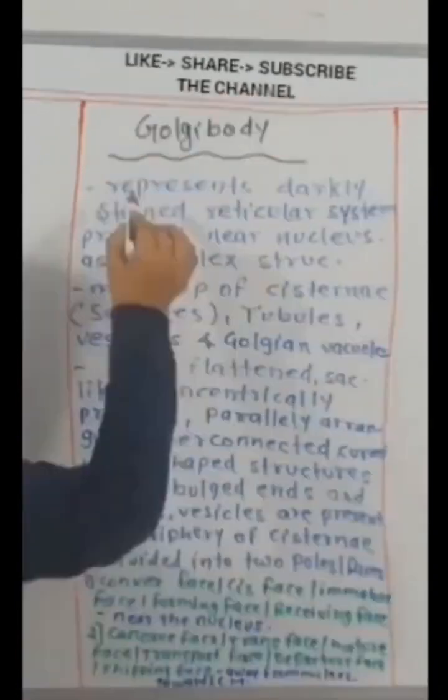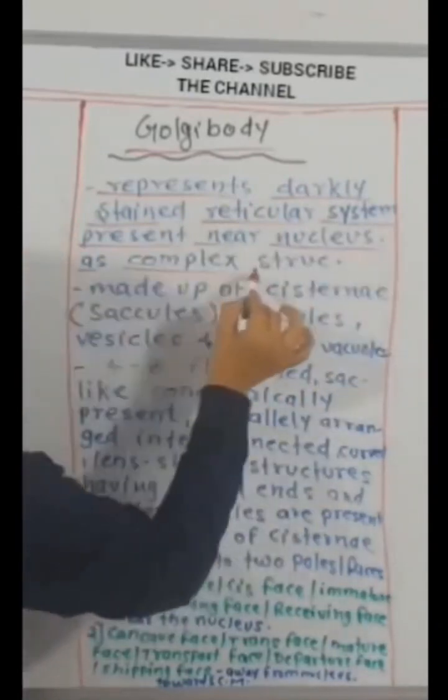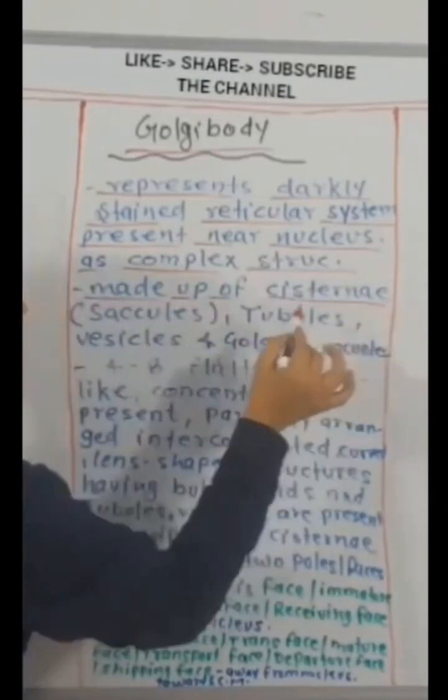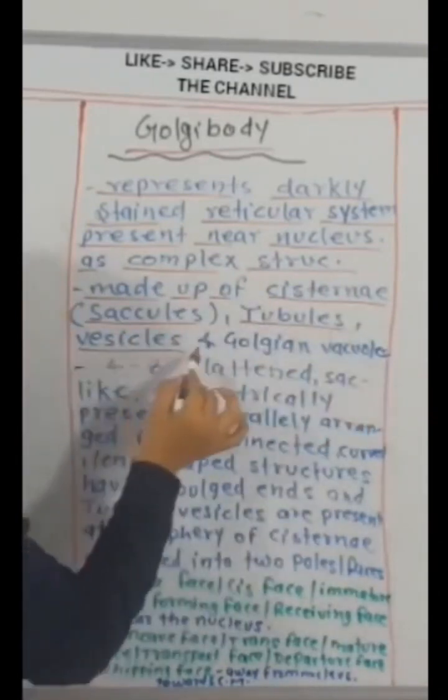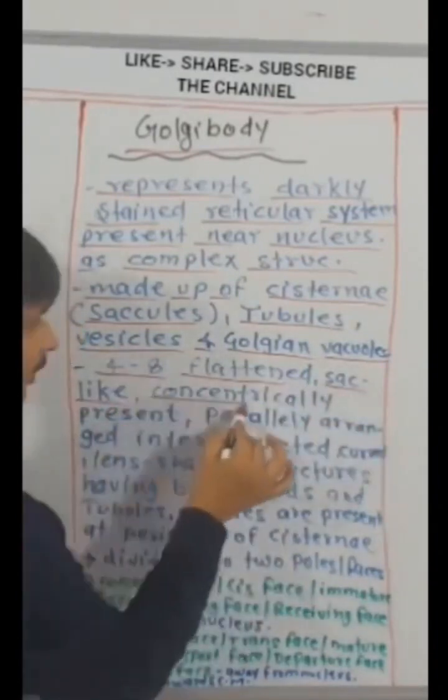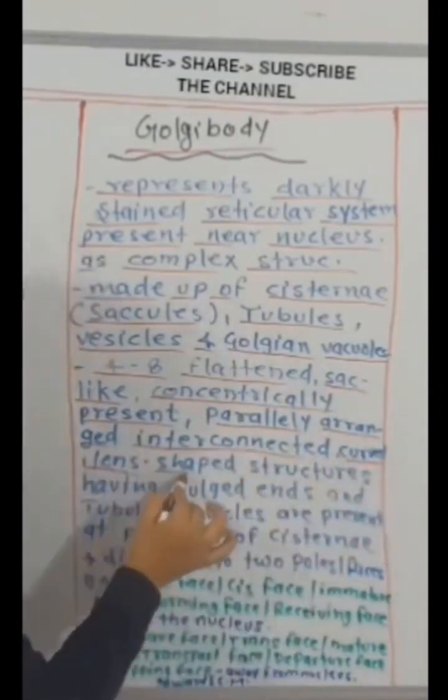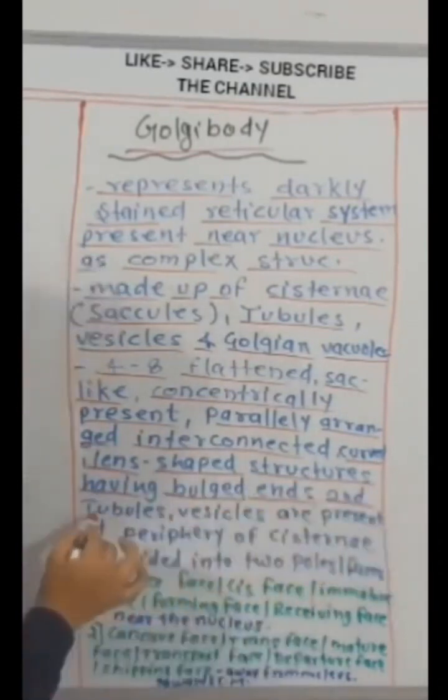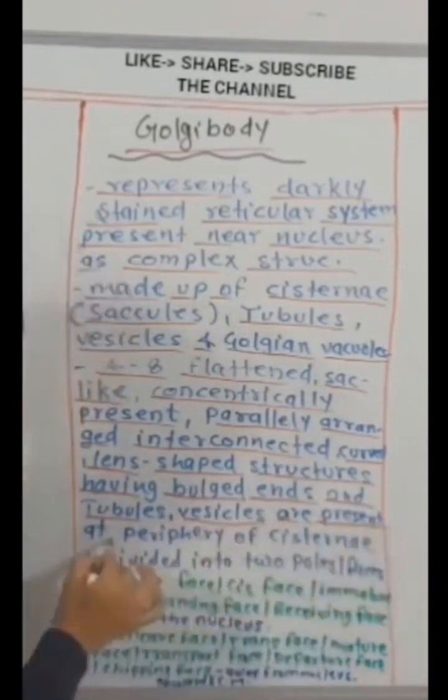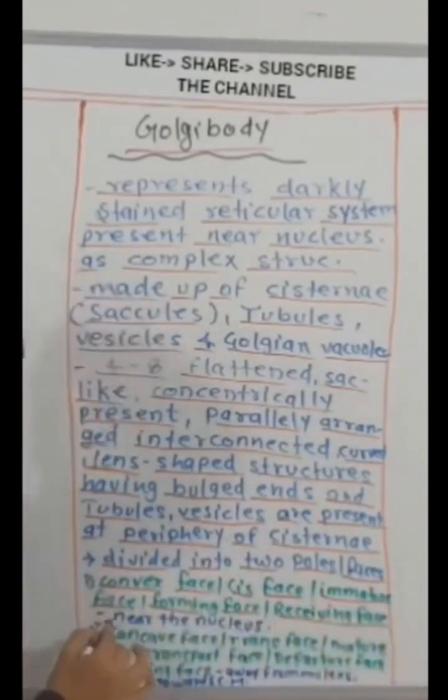Golgi body represents darkly stained reticular structure present near nucleus as complex structure. Made up of cisternae, saccules, tubules, vesicles and Golgian vacuole. Four to eight flattened, sac-like, concentrically present, parallelly arranged, interconnected, curved, lens-shaped structures having bulged ends and tubules, vesicles are present at periphery of cisternae. Divided into two poles, faces. Convex face, cis face, immature face, forming face, receiving face, near the nucleus.